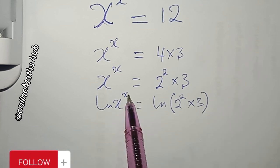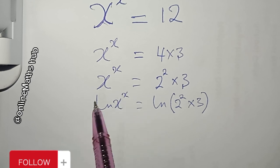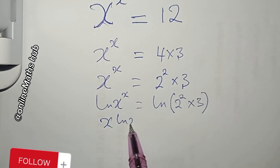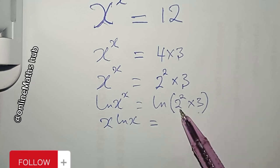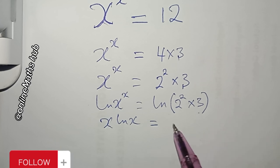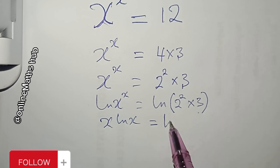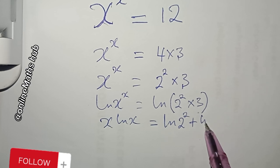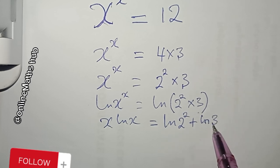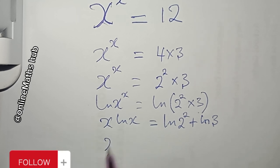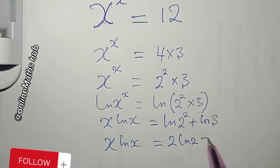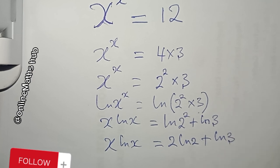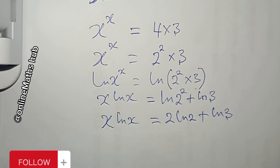Using the log power property, I bring the exponent down: x times natural log of x equals the expanded form of the right side. Since log of a product splits into a sum, I get: 2 times natural log of 2, plus natural log of 3.